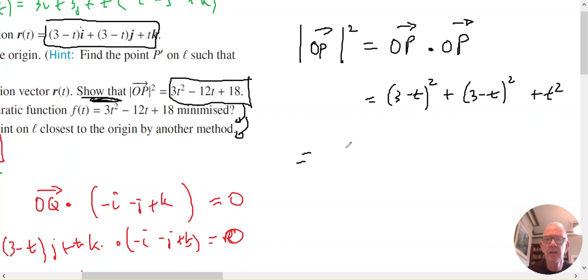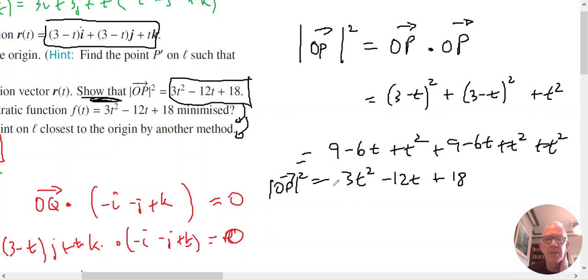And that's going to be 9 minus 6T plus T squared, plus 9 minus 6T plus T squared plus T squared, which is 3T squared minus 12T plus 18. And that's exactly what I had to show that the magnitude of OP squared was. So that's part B.